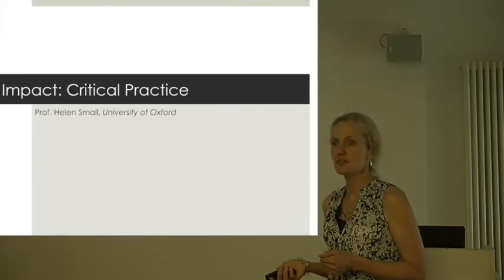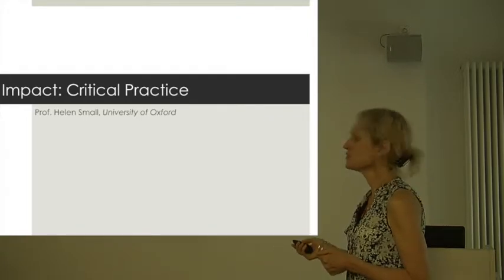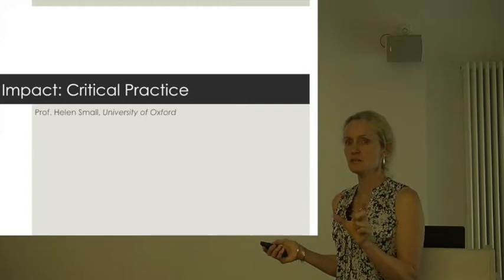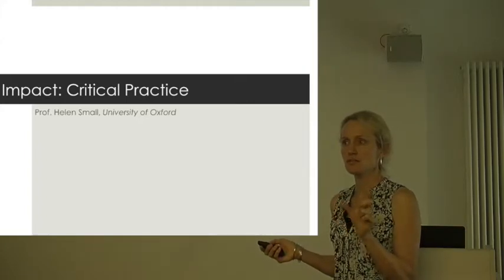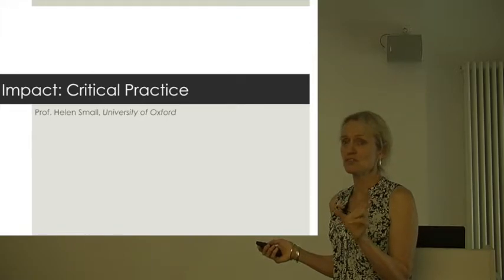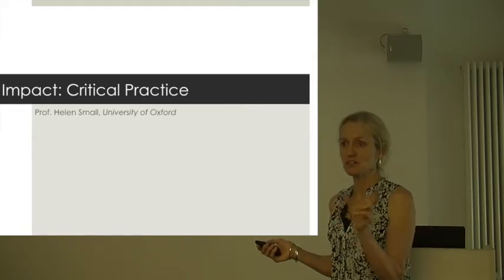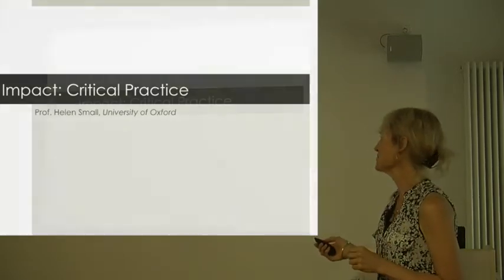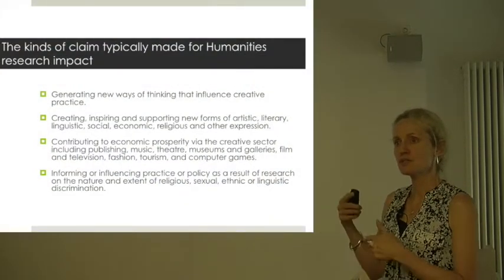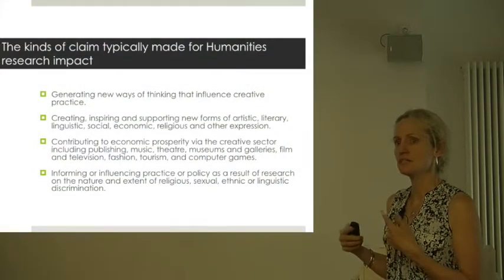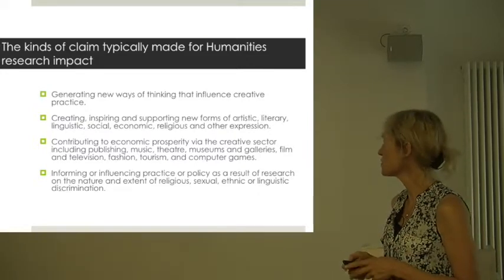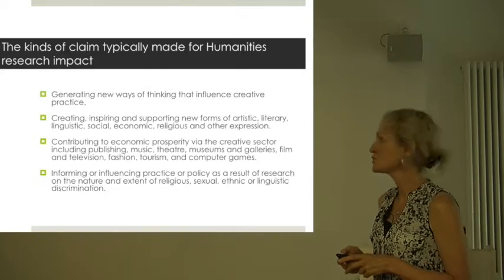Now before I start on the Jane Austen one, let me just take you through what I've done here, which is to draw up a list of the kinds of impact typically claimed for the arts and humanities. I'm simply not competent to do the social sciences meaningfully, so I'm going to pull you across to the humanistic wing of what you're doing a little. I've added to them because in the process of writing these, it seemed to me we needed slightly more refined claims.